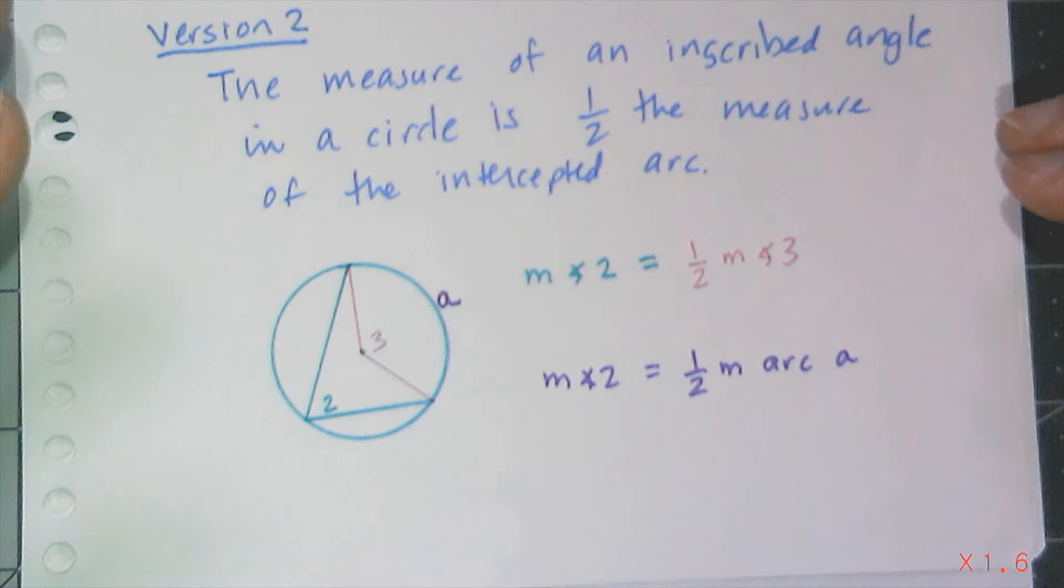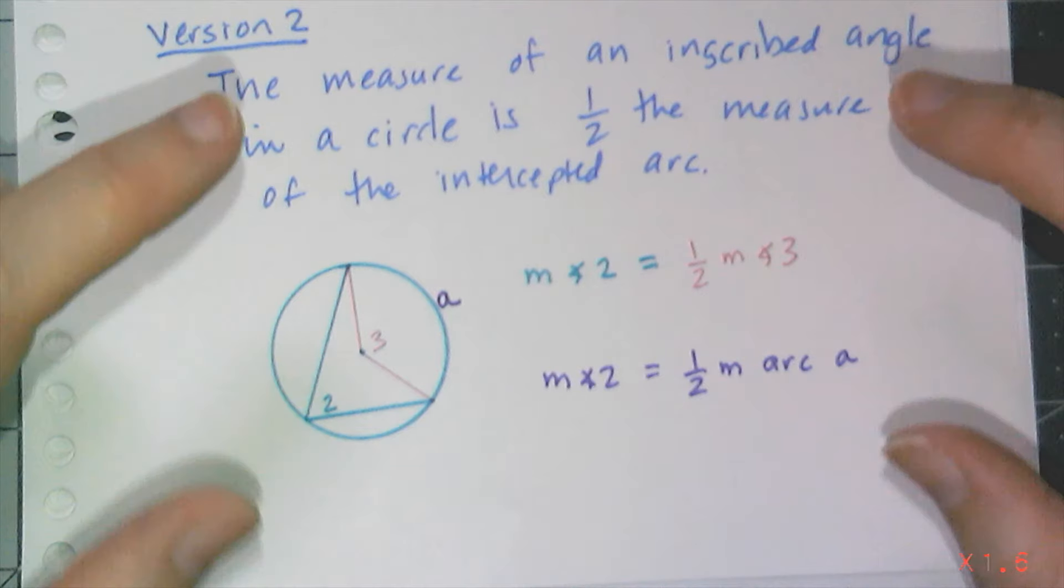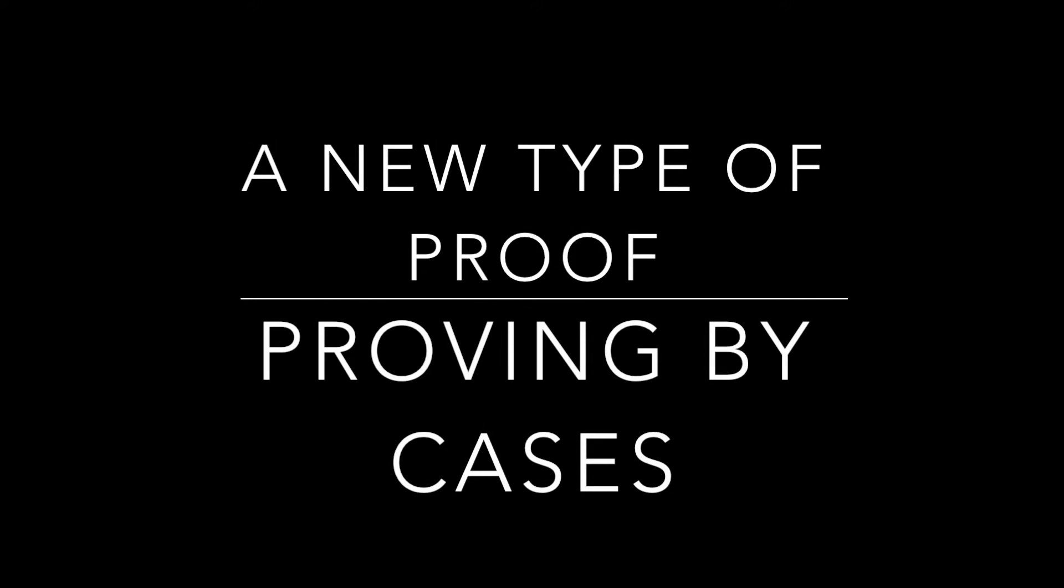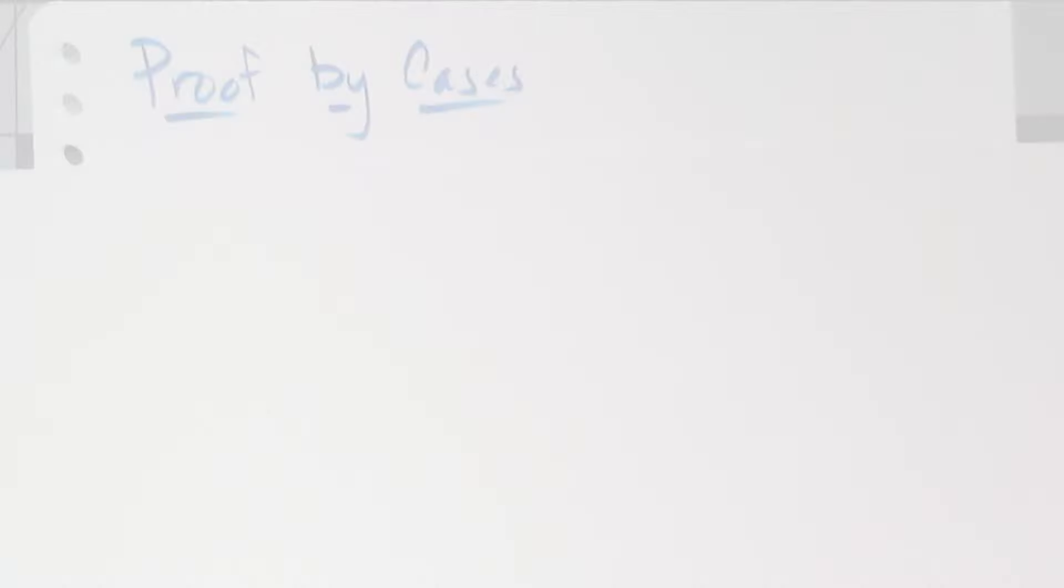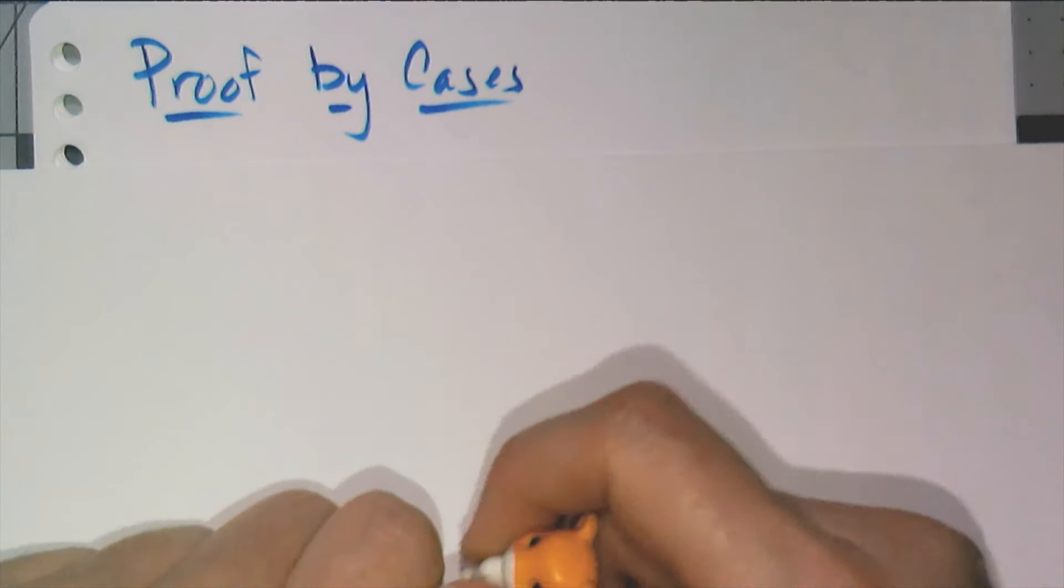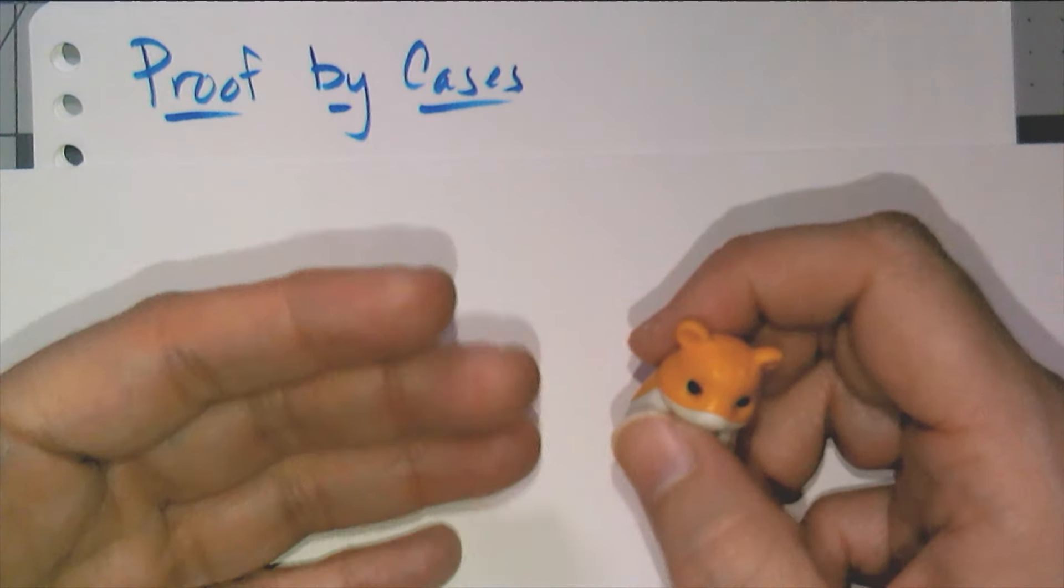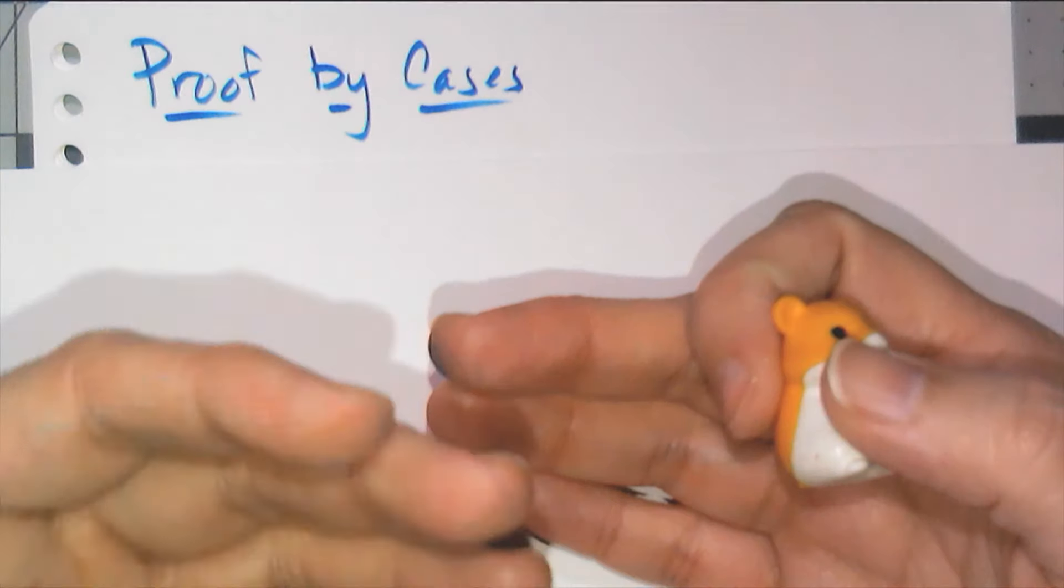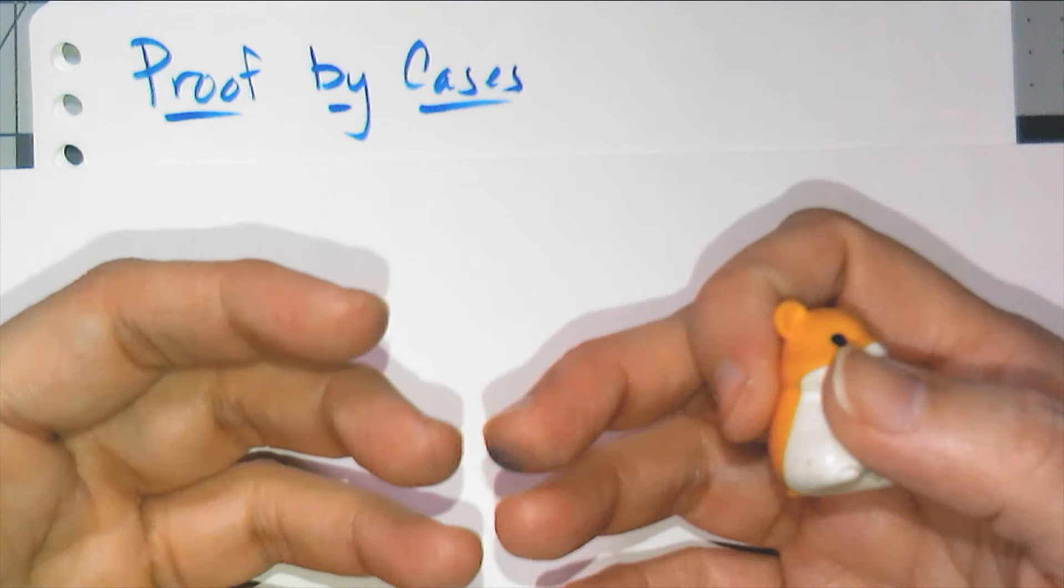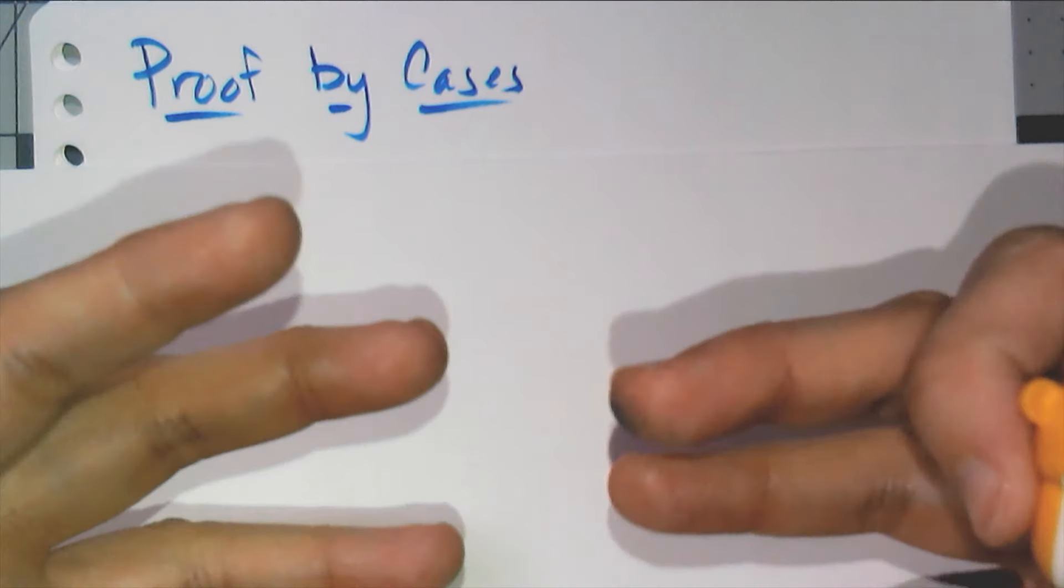Now of course we're going to give you practice problems where you have to apply this knowledge, but I want to focus the rest of this video on how to prove this conjecture. Now what sets this conjecture's proof apart from the other conjectures is that previous conjectures I could draw a picture and create a series of arguments generic enough that encapsulated all of the possible instances of that thing, right?